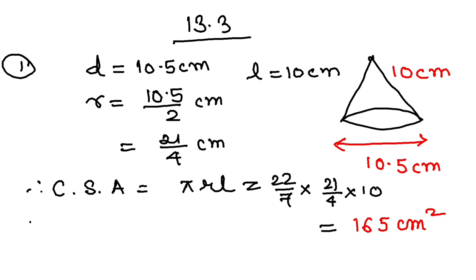Now regarding TSA, the formula for TSA is πr into L plus r. If you substitute all the values and calculate, the final answer you should get is 251.625 centimeter square. You can obviously do the calculations.